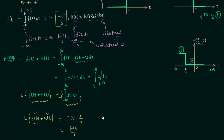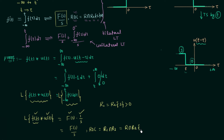For the region of convergence, recall the convolution in time property: the ROC is at least R1 intersection R2, where R1 is the ROC of F(s) — which we assumed to be R — and R2 is the ROC of the unit step signal, which is the real part of s greater than 0. Performing the intersection gives ROC at least R intersection with real part of s greater than 0, proving our property.